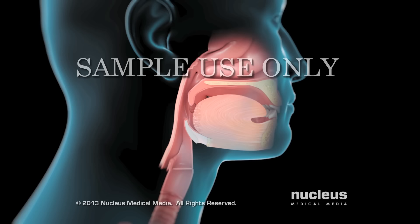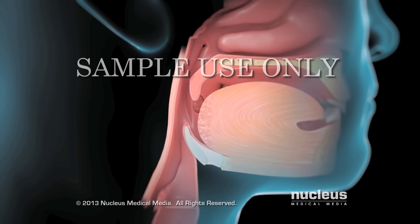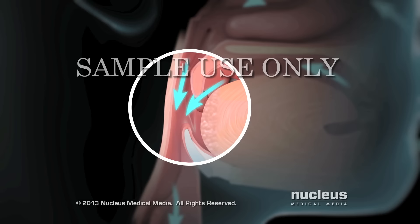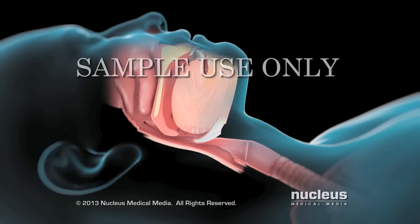Each time you breathe in, negative suction pressure pulls the soft tissues in your mouth and pharynx inward. The muscles in your pharynx respond by pulling the soft tissues outward again, which keeps your airway open.